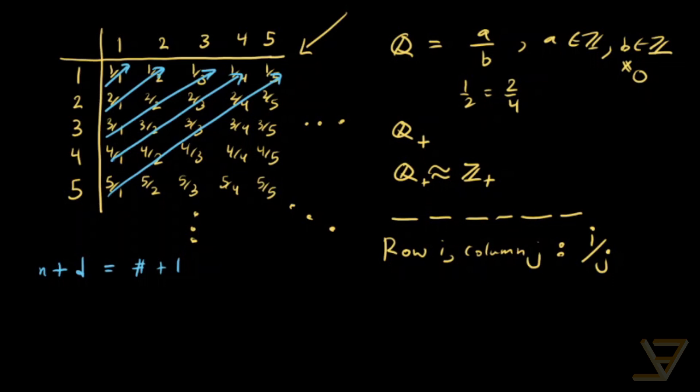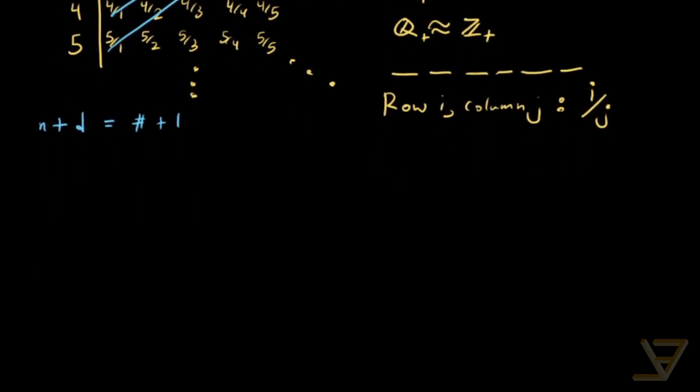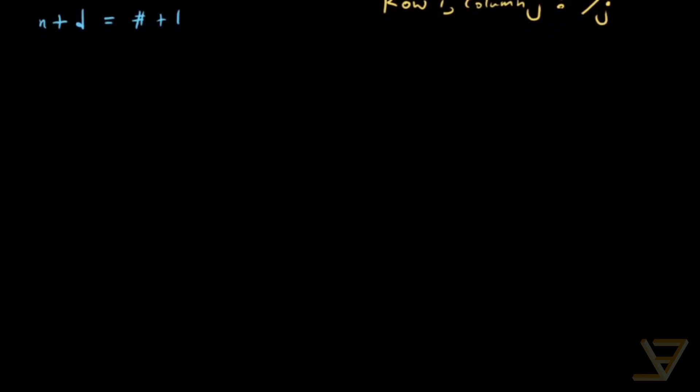So the positive rationals are countable. We just showed that they are. Now we have to show that the rationals themselves, which has more than double the size in a sense, is also countable.